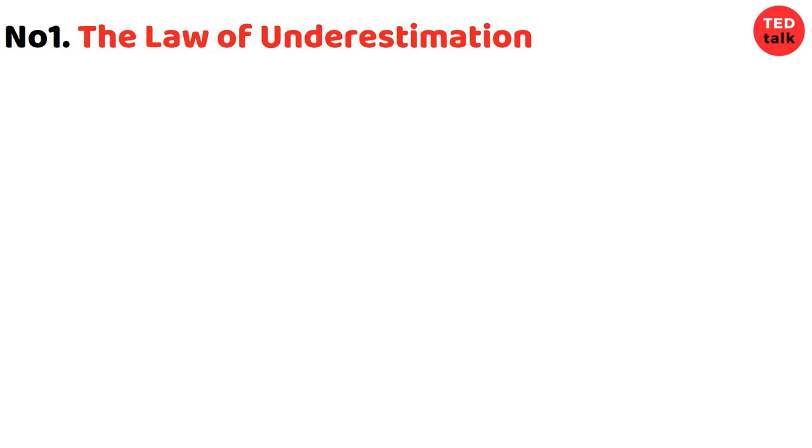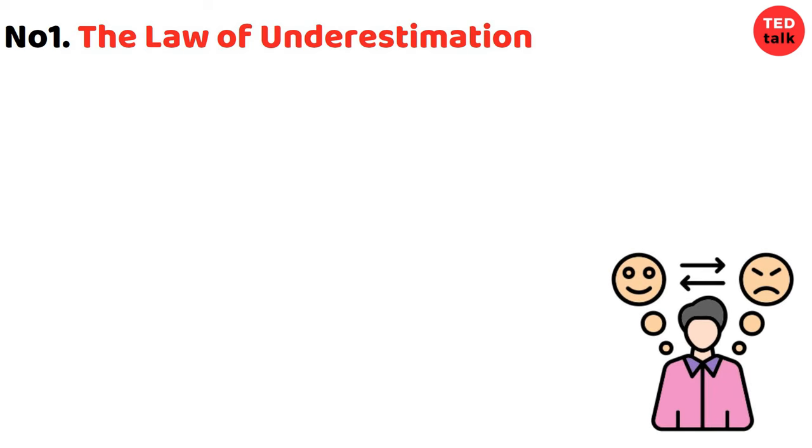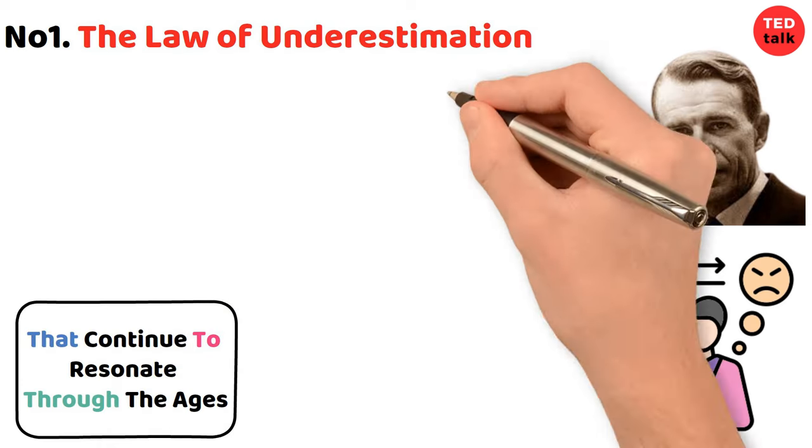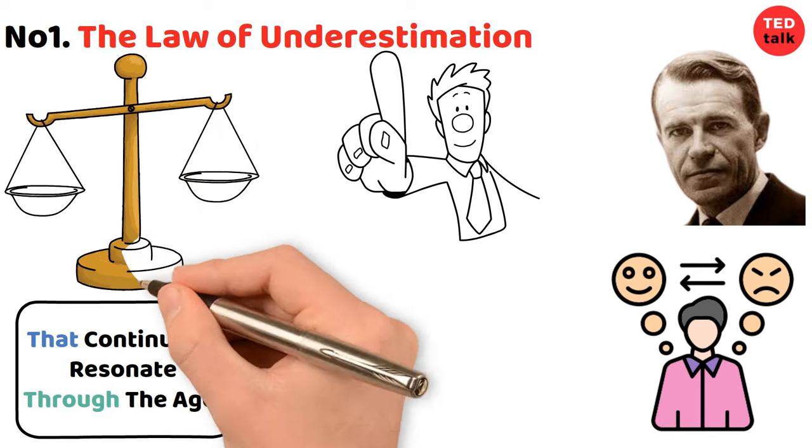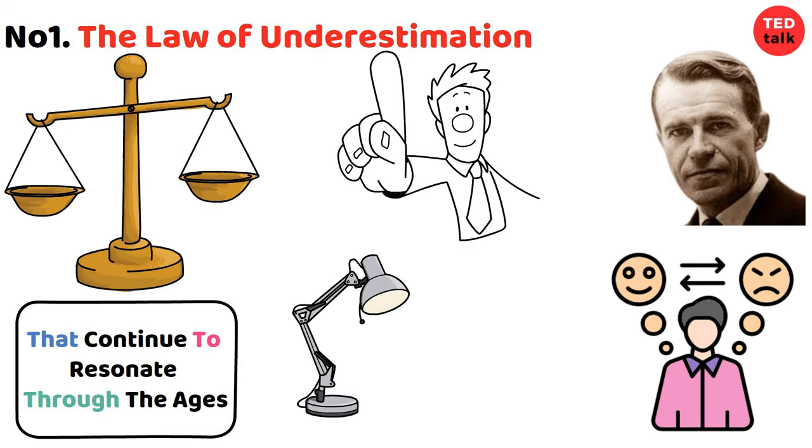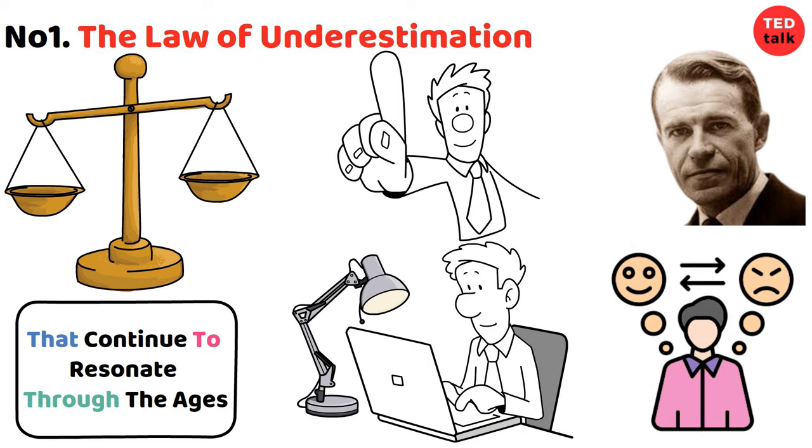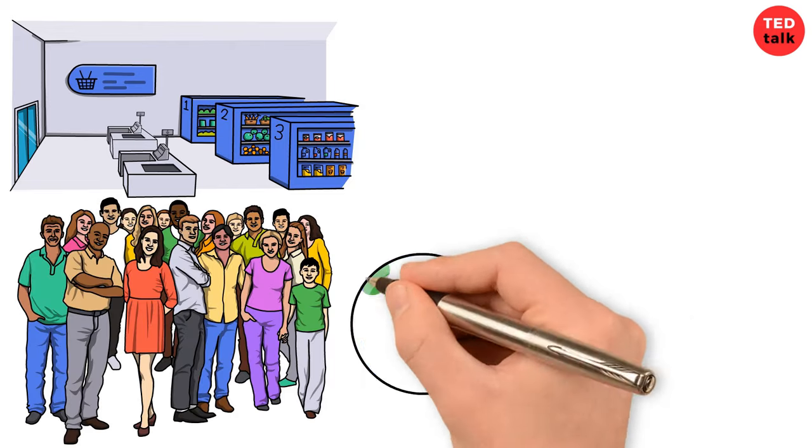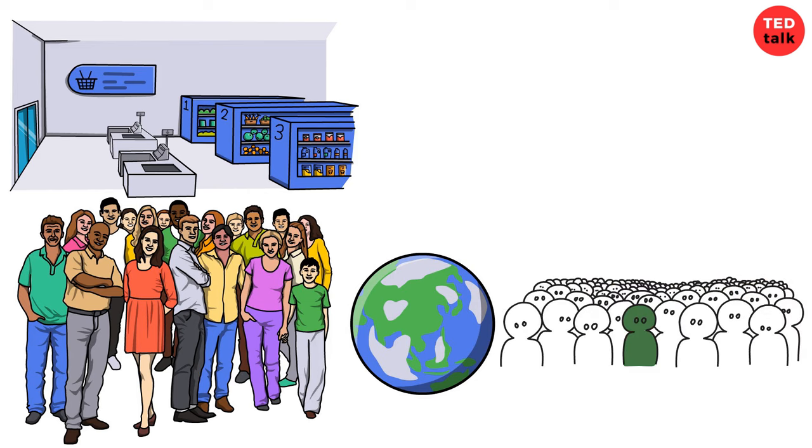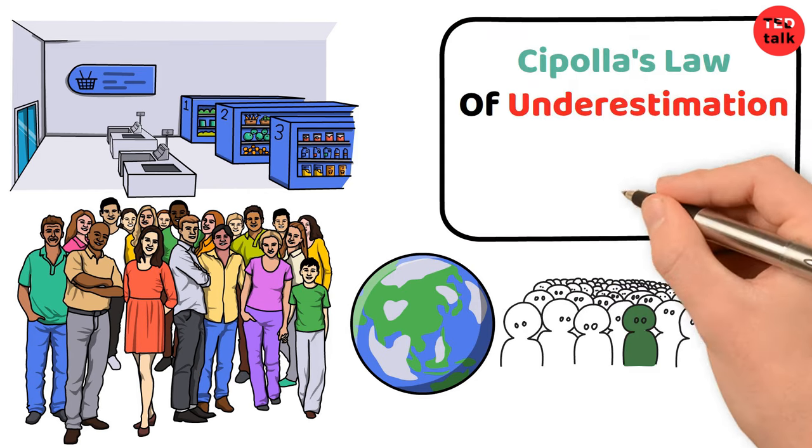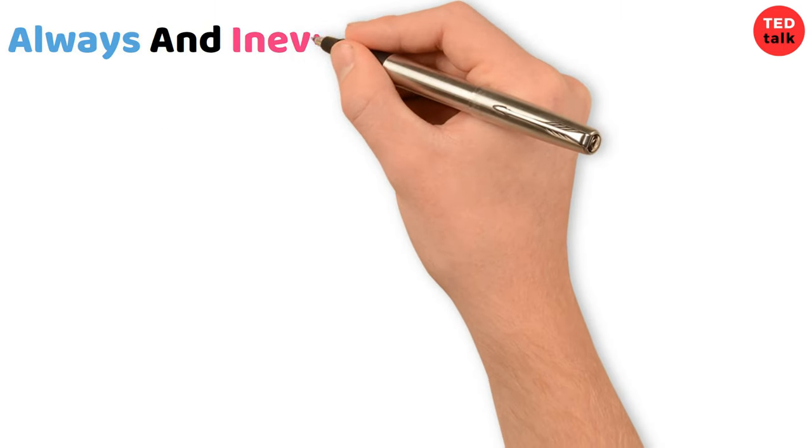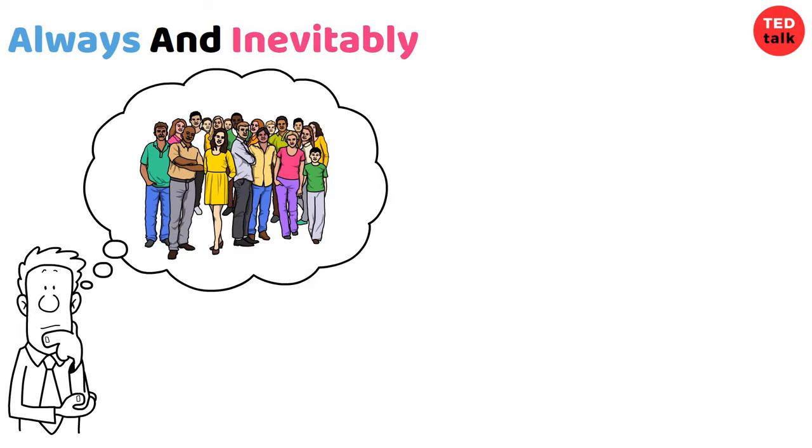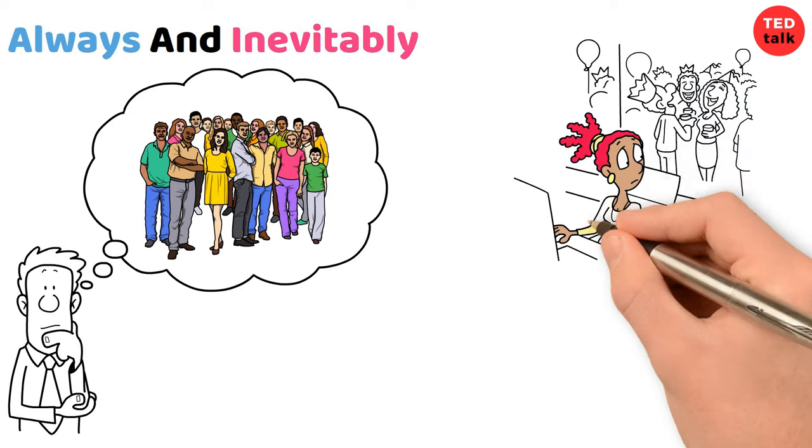Number one: the law of underestimation. In the grand tapestry of human behavior, Carlo M. Cipolla uncovered profound insights that continue to resonate through the ages. One of his seminal observations, the law of underestimation, sheds light on a universal tendency ingrained within us all. Imagine a bustling marketplace where people weave through the crowds, each lost in their own world. Amidst the chatter and hustle, Cipolla's law of underestimation whispers its timeless truth: always and inevitably, everyone underestimates the number of stupid individuals in circulation.